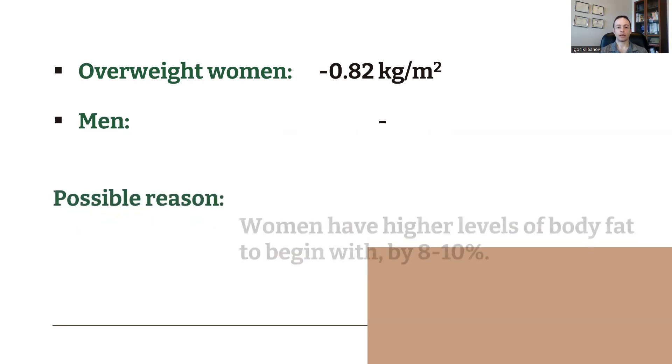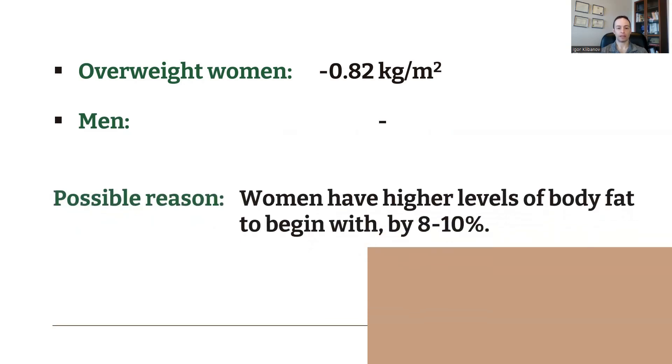The possible reason for that is that women have higher body fat levels to begin with by about 8 to 10%. So if a man weighs 150 pounds and a woman weighs 150 pounds, the composition of those 150 pounds is different. The man's 150 pounds will be more muscle, less fat. The woman's will be the opposite.